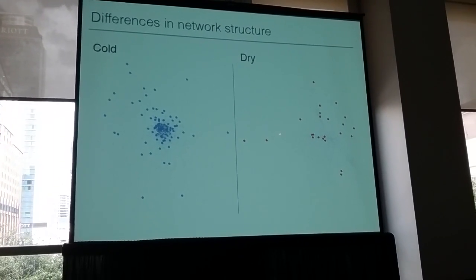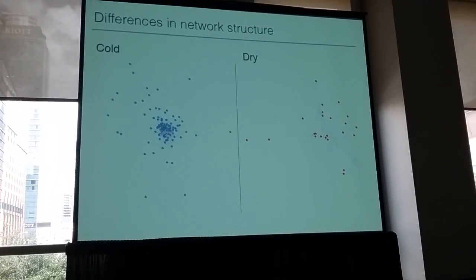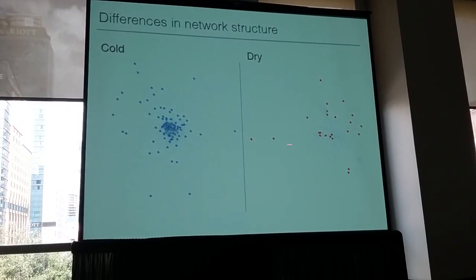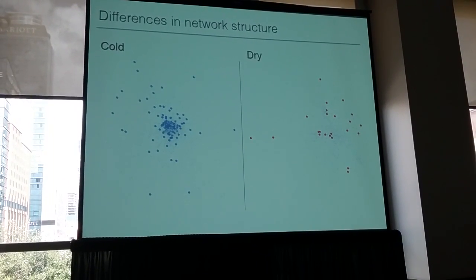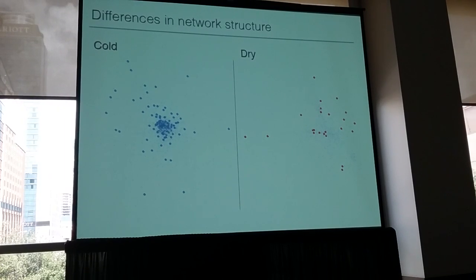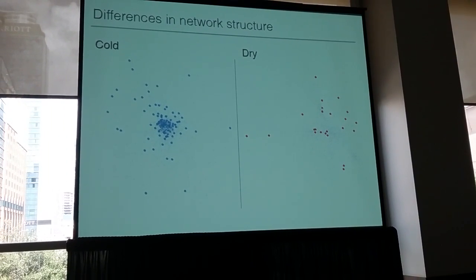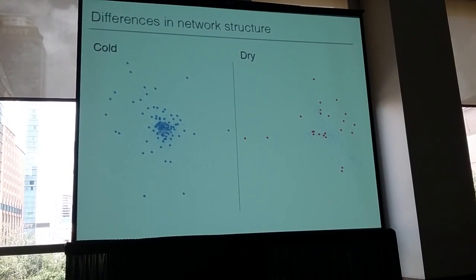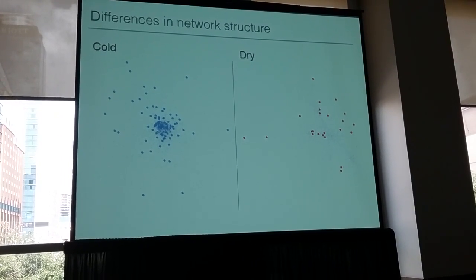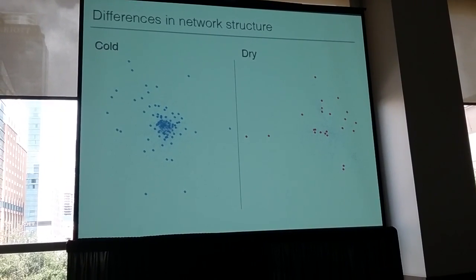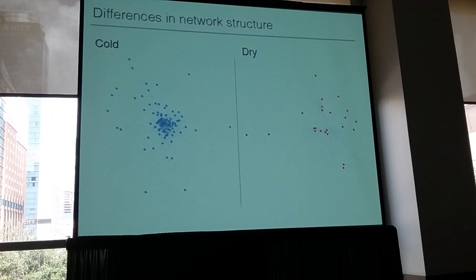We see the opposite for cold genes — 50% of the cold genes are sitting in just two giant communities. So they're not randomly distributed throughout the genome, and they're sitting in different types of communities with respect to community size. If we look at two communities that have lots of cold or dry genes, the colors show genes with G×E effects and gray shows genes without. Squinting at it, you can convince yourself that the blue dots are in the middle of the blob and the red dots are spread out on the periphery.